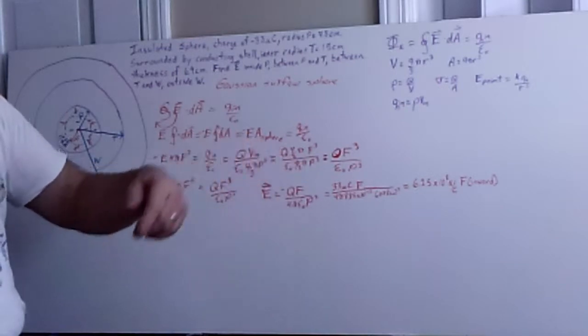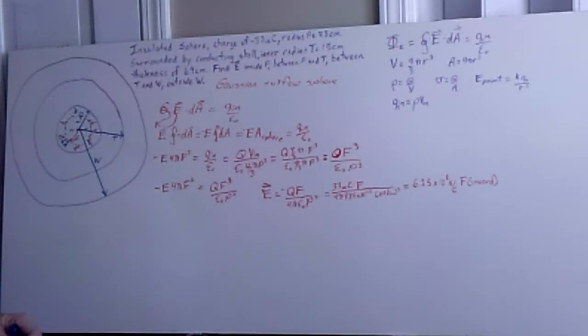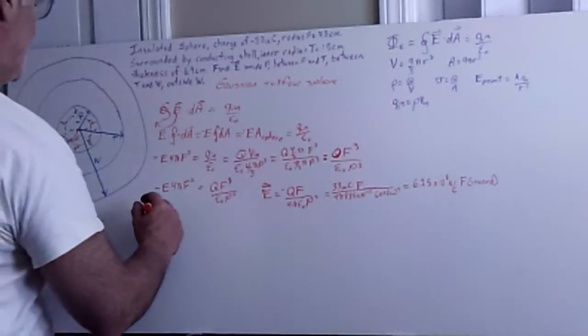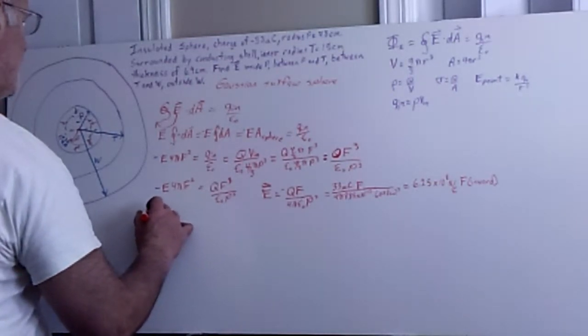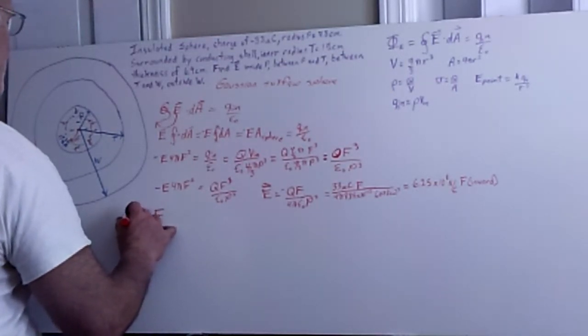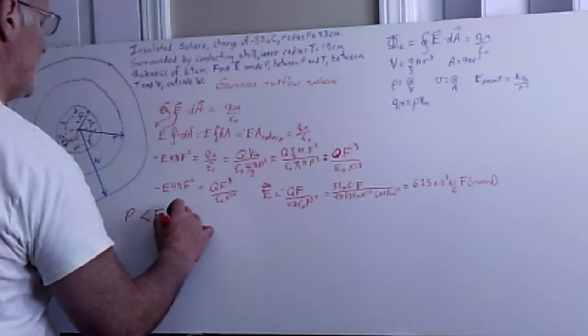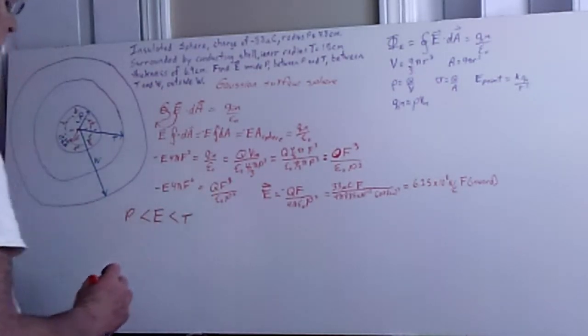And so that is where we use our equation here for E equals kQ over r squared. There's a 4 pi epsilon naught version of that as well, but I like to keep it simple, so we can just say that E for greater than p, but we're less than t, meaning we're between the two spheres.